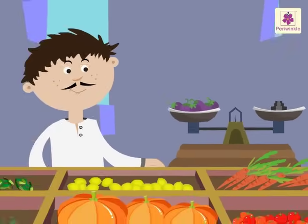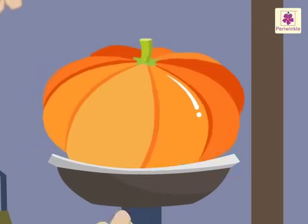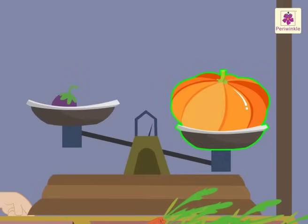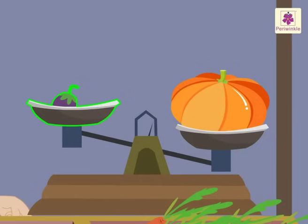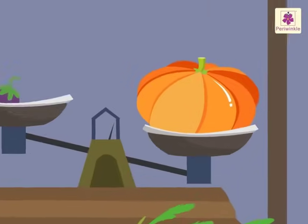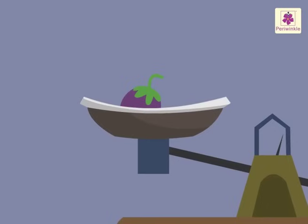Look — Ragu kept a pumpkin in one pan and a brinjal in the other. The pan with the pumpkin went down and the pan with the brinjal went up. The pan with the heavier object always goes down and the pan with the lighter object always goes up. So the pumpkin is heavier than the brinjal.